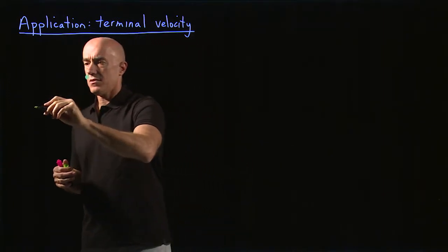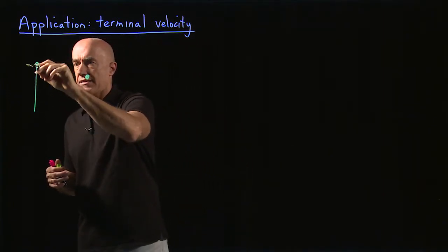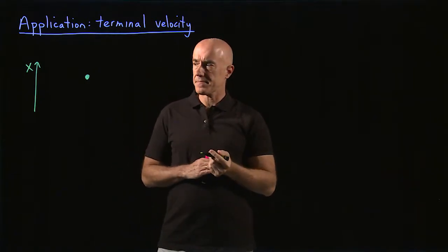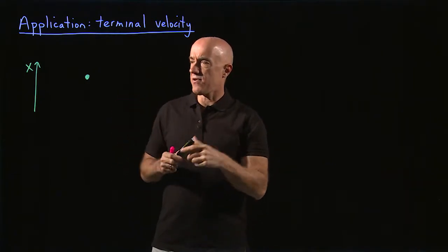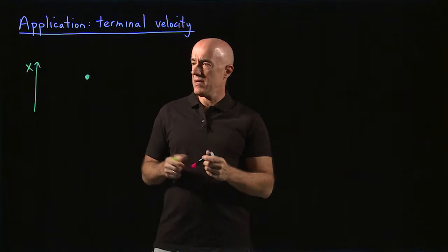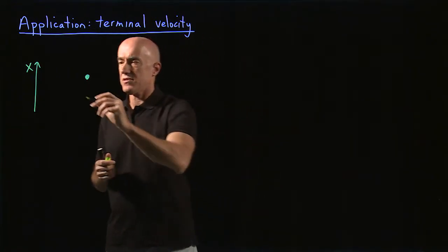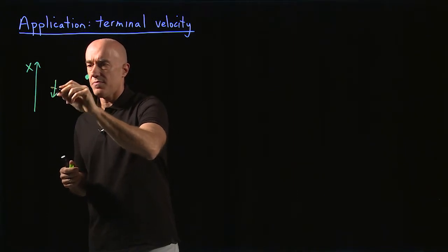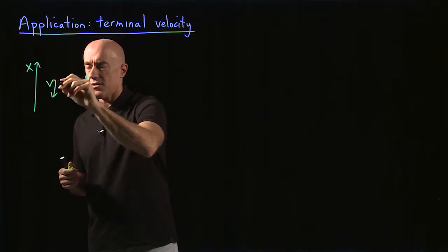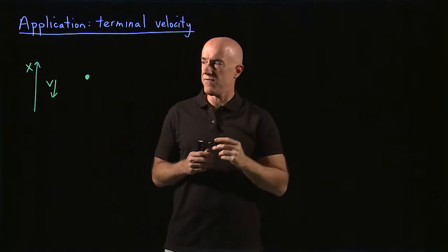So we have some skydiver who's falling under gravity. We have to define some coordinate system. So let's define the x-axis to be pointing up. So the skydiver has forces on him. So let's, for the sake of this diagram, let's assume that his velocity is going to be down. So the skydiver is falling.